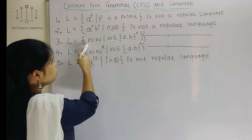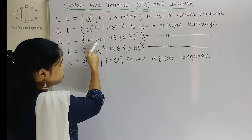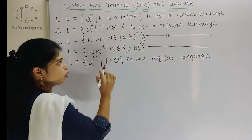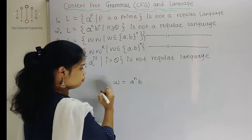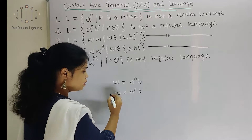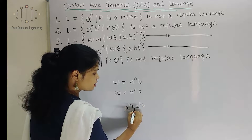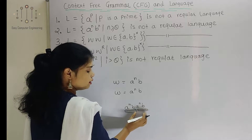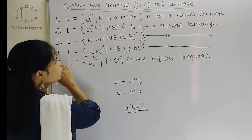One more language is L equals WW, where W is any string and W belongs to {A, B}. Suppose we take W equals A raised to N, B — this is W. Then one more W is the same, A raised to N, B. So our WW language will become A raised to N, B, A raised to N, B. Again, this is not a regular language because we have to store this part and then repeat it, so we cannot represent it with the help of finite automata.